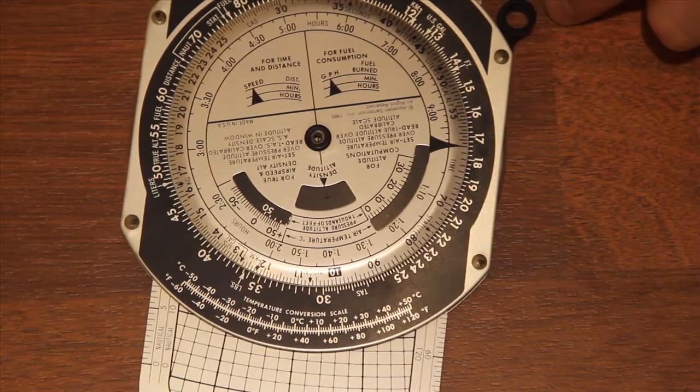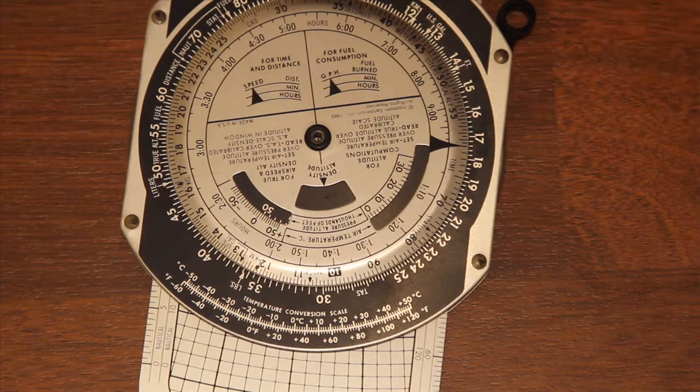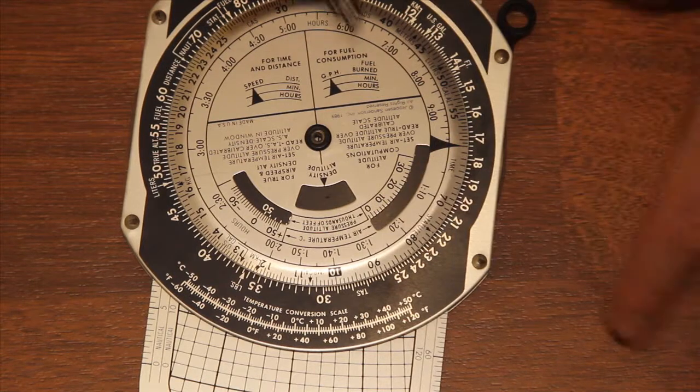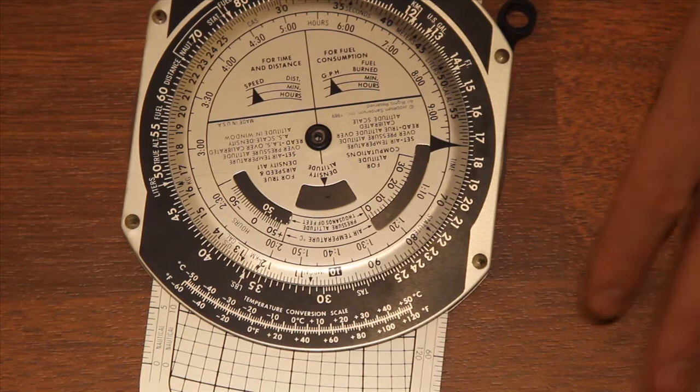If you come around here it's 16 to 55. So if you set a ratio on any of these inner and outer scales, everywhere else on the flight computer will read the same ratio.